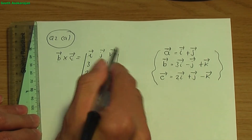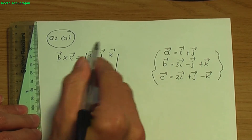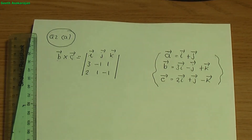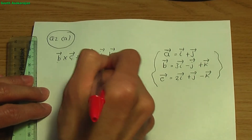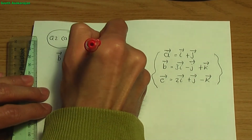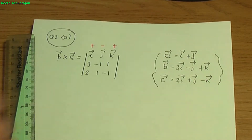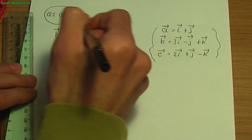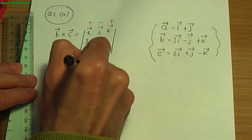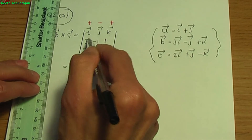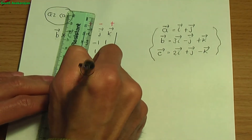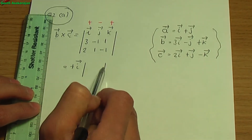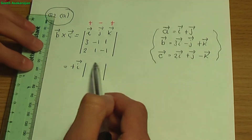To evaluate the 3 by 3 determinant — I'll provide a link to that video in the description — I write the signs associated with the first row: plus, minus and plus. Then I expand: plus i multiplied by the determinant of a 2 by 2 matrix, found by ignoring the row and column associated with i.